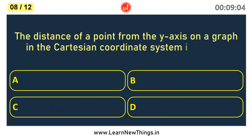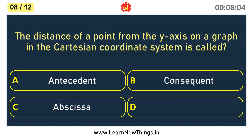The distance of a point from the y-axis on a graph in the Cartesian coordinate system is called the Abscissa.